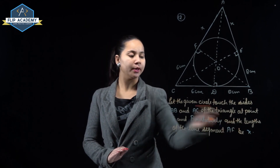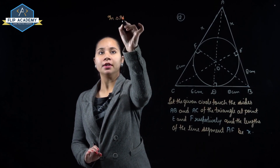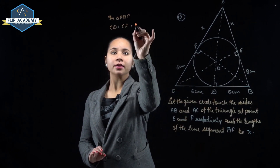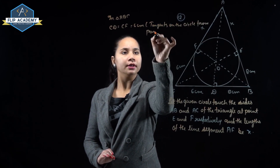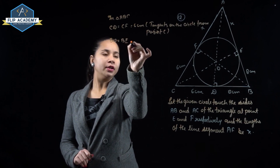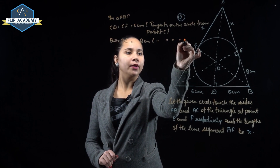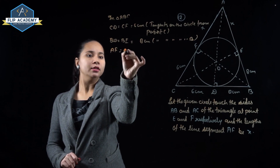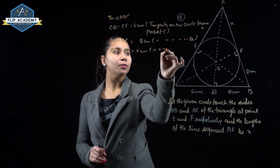The length of the line segment AF is X. In triangle ABC, CD equals CF equals 6 cm — these are tangents on the circle from point C. Similarly, BD equals BE equals 8 cm — tangents on the circle from point B. And AF equals AE equals X cm — these are tangents on the circle from point A.